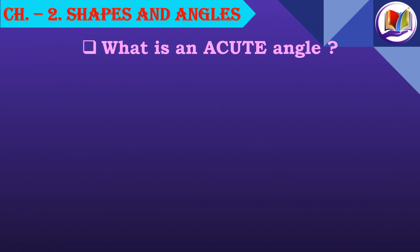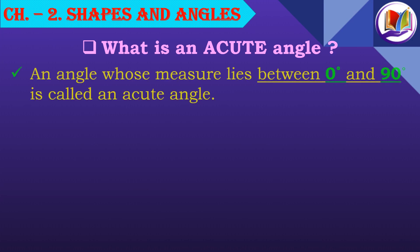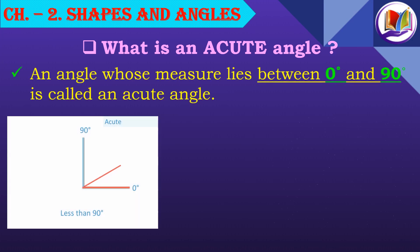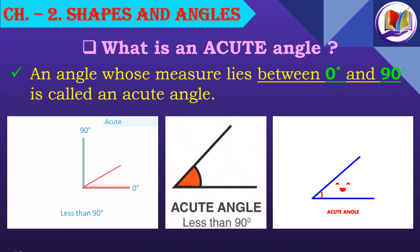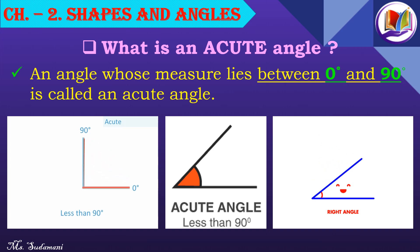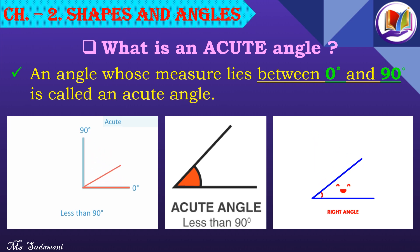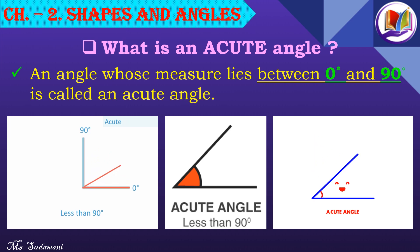What is an acute angle? An angle whose measure lies between 0 degrees and 90 degrees is called an acute angle. The angle is always less than 90 degrees. It is also called a cute angle because it is a small angle — just like when kids are small, they look very cute. The same way, the smaller angle also looks very cute.